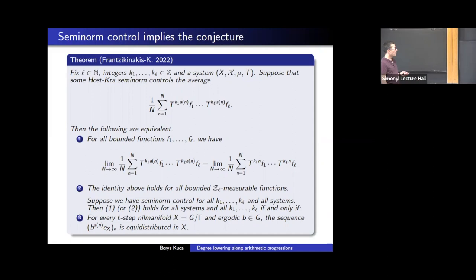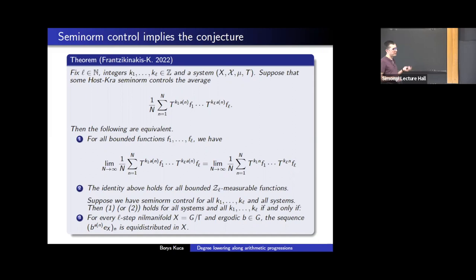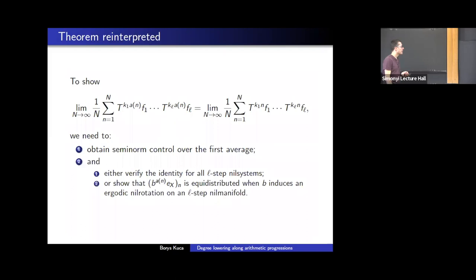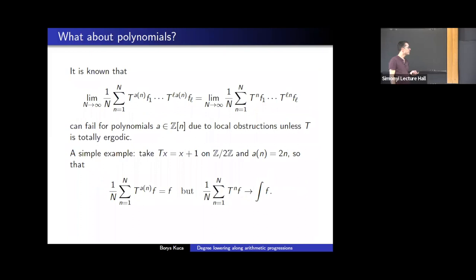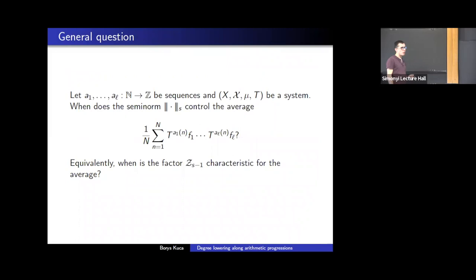Q: Which implication is harder? A: Implication one implies two is trivial because we want the identity to hold for all functions, whereas two only requires it for all Z_L functions. The difficult part is showing two implies one. For the equivalence of two and three: one direction uses the Host-Kra structure theorem, the other uses approximation by multi-correlation sequences. Two equivalent to three is more or less standard; the main content is really between two and one.